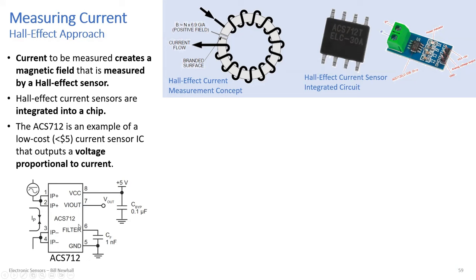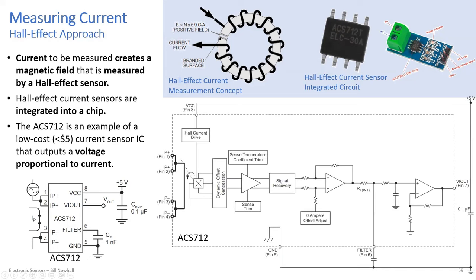Pins one and two are where the current goes in; pins three and four are paralleled together to handle higher current — that's where the current goes out. You apply VCC, apply ground, and there you have current measurement. Looking inside this IC, you can see the current path on one side and the output voltage proportional to current on the other. The current goes through a conductor and there's a Hall effect sensor right next to it measuring the magnetic field — a ratiometric Hall effect sensor, not just a switch.